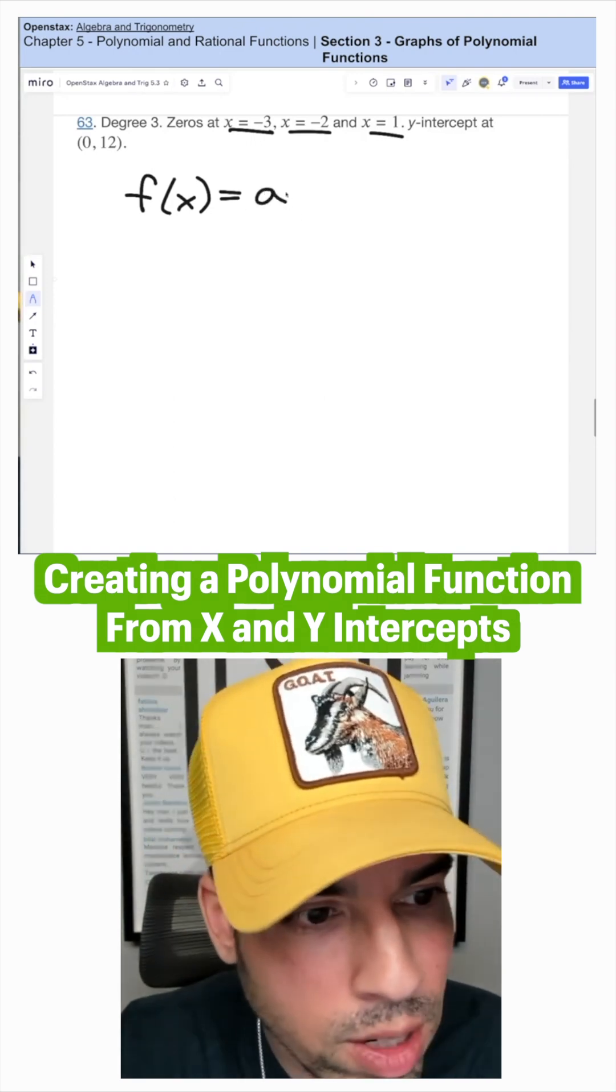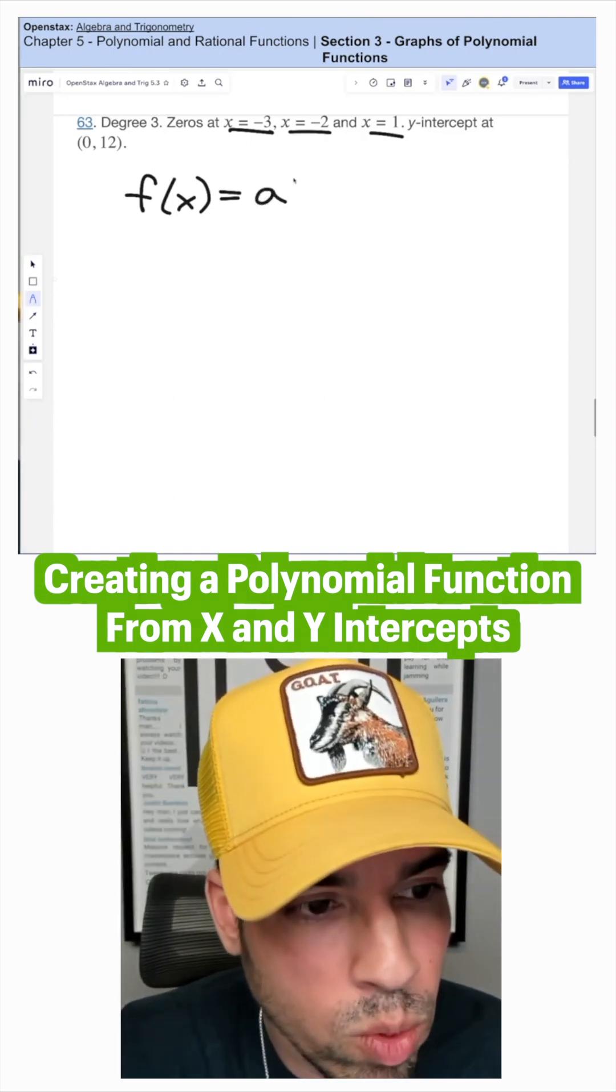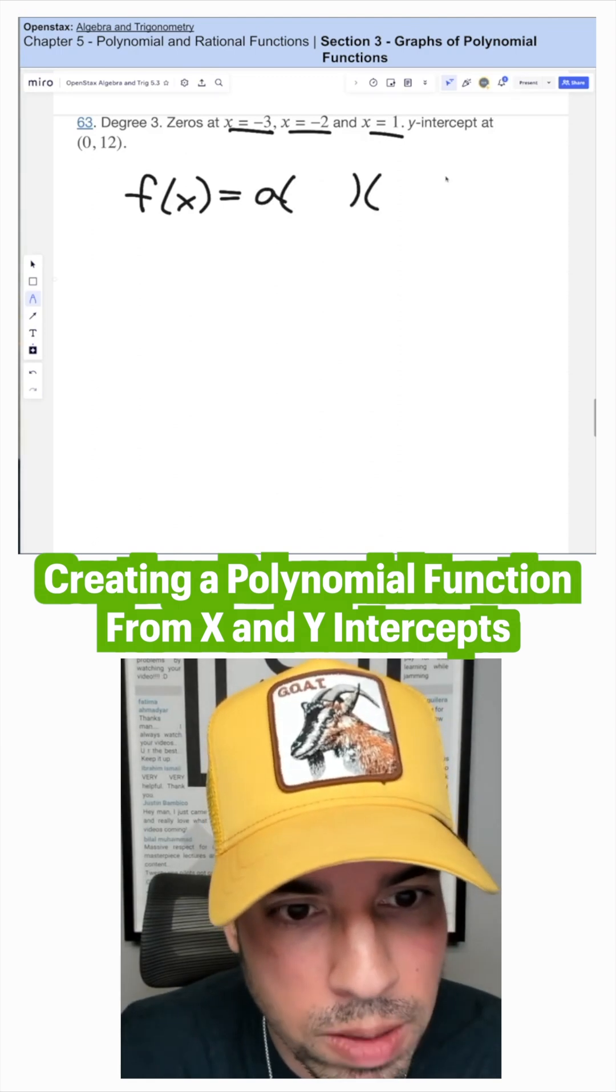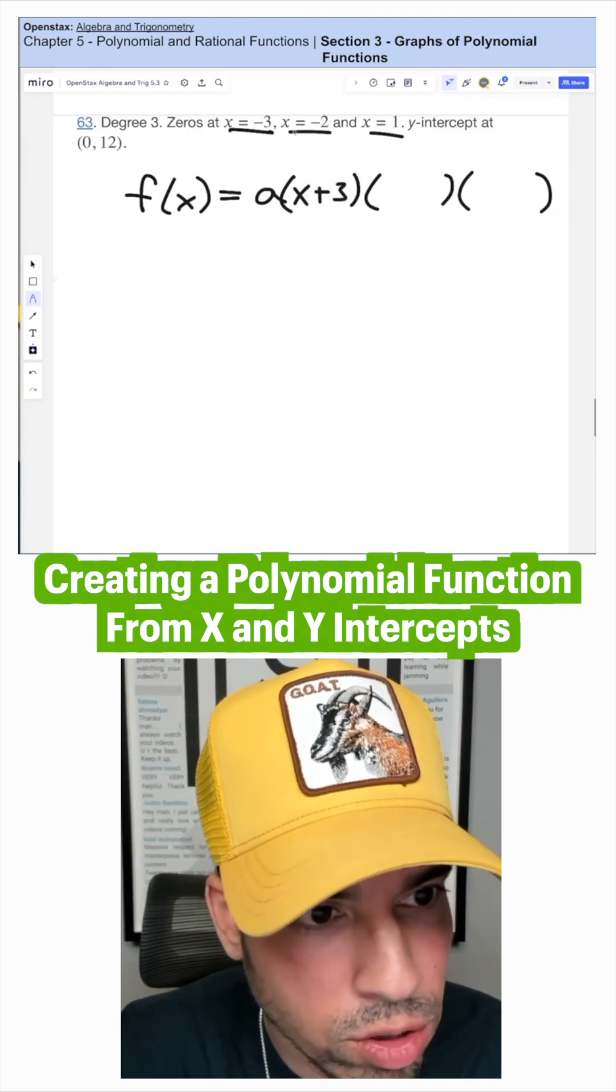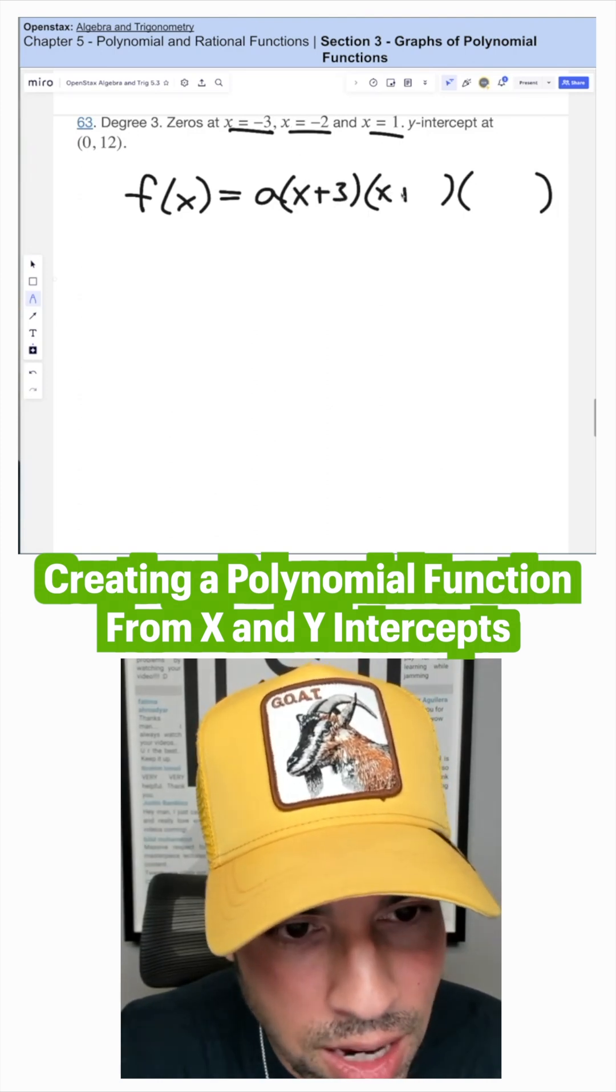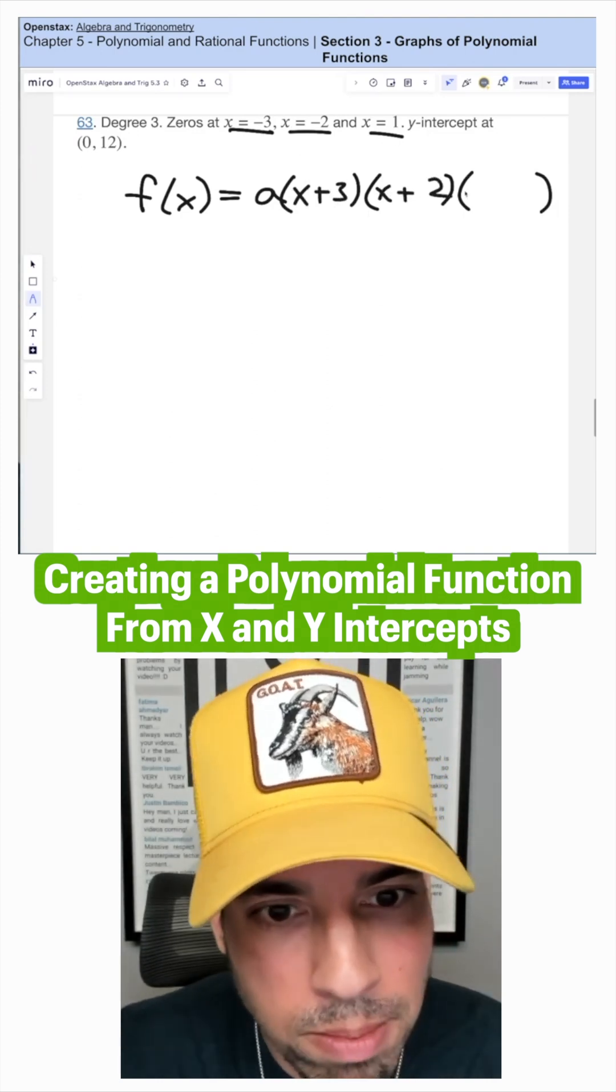So let's check it out. We have a constant 'a' that we don't know yet, but we're going to figure that out shortly. In here, we have x minus negative three (aka x plus three), x minus negative two (aka x plus two), and x minus one.